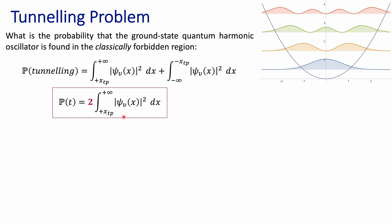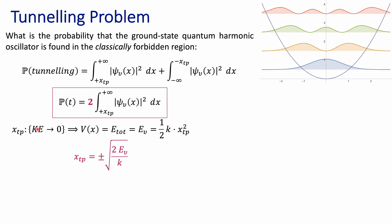Now that we've established that formulation, remember that the classical turning points are those where the kinetic energy of your system goes to zero. That means that the total energy of your system equals your potential energy — the energy of that particular quantum state is going to be equal to the potential energy, which is one-half of the force constant times the displacement squared. At this particular point, this displacement is that associated with the turning points depending on the principal quantum number.